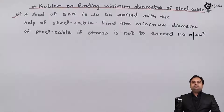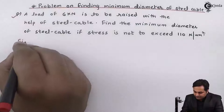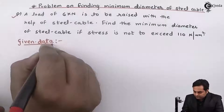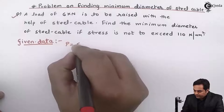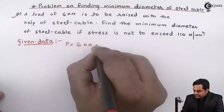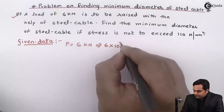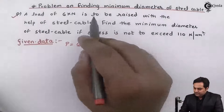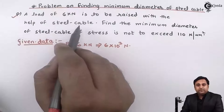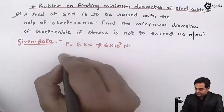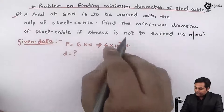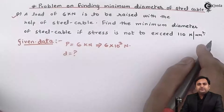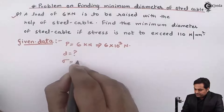This is the question. Whatever is given, I will write that in the form of data. It is given that a load P is six kilo Newton, that is 6 × 10³ Newton, is to be raised with the help of a steel cable. We need to find the minimum diameter of the steel cable. Stress sigma is given as 110 Newton per mm square.